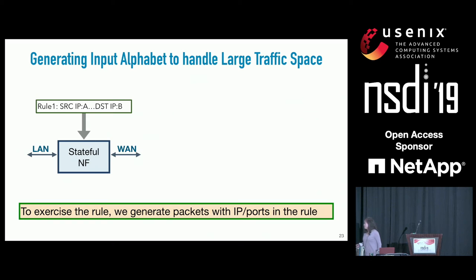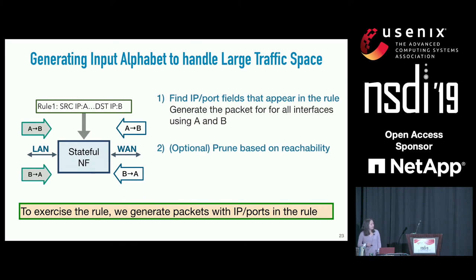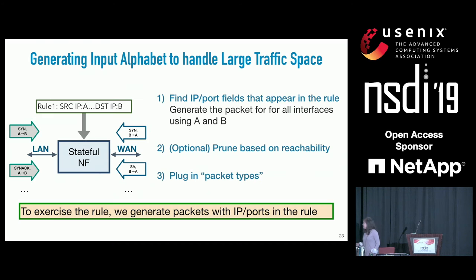What we observe is that to exercise a rule while handling the large traffic space, we can generate packets using just the IPs and ports that appear in the rule. Using those values, we generate packets for all interfaces and can optionally prune them based on reachability—for example, if a source IP entering from the LAN cannot be a public IP. Finally, we plug in relevant packet types, such as SYN, SYN-ACK, ACK, FIN, and so on for TCP.